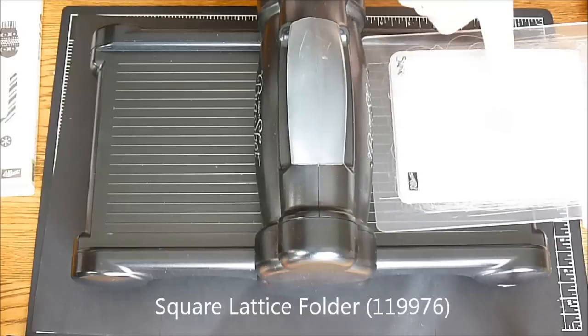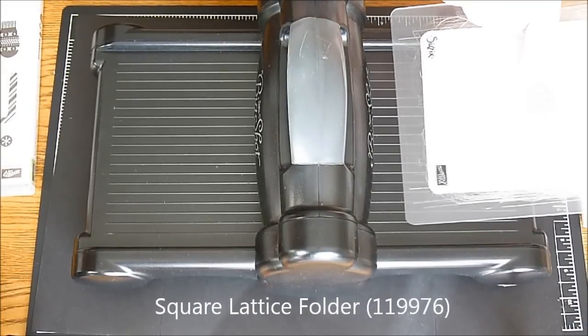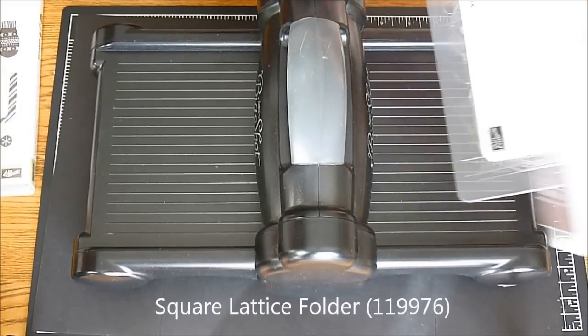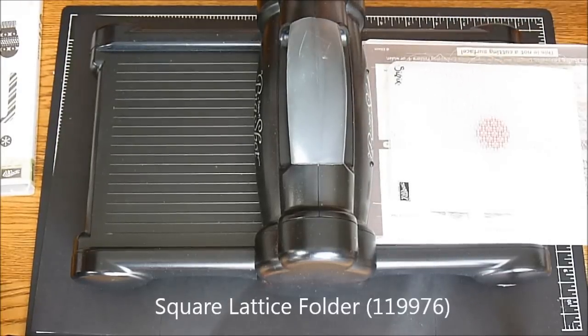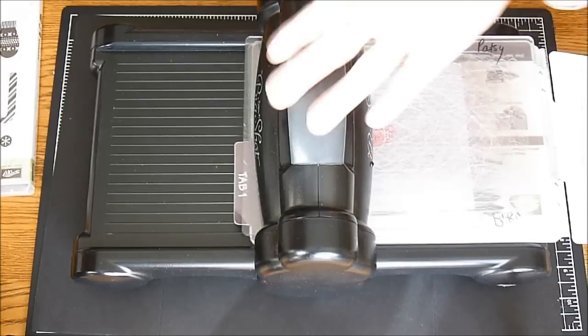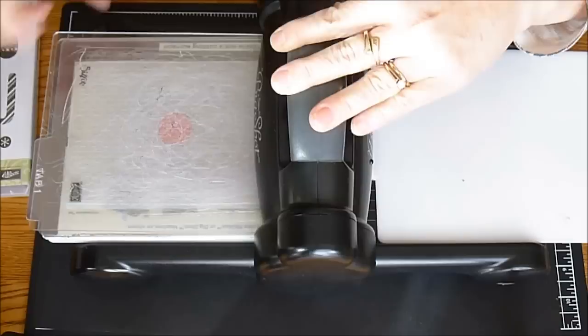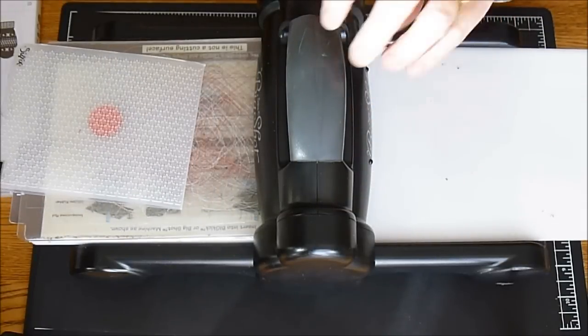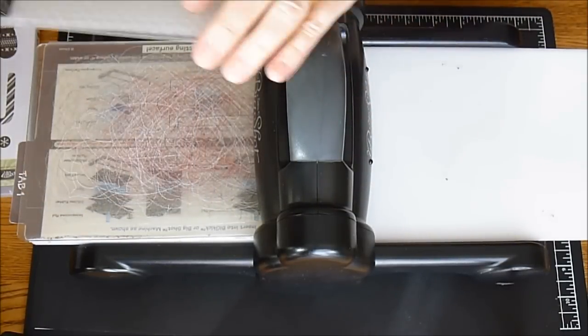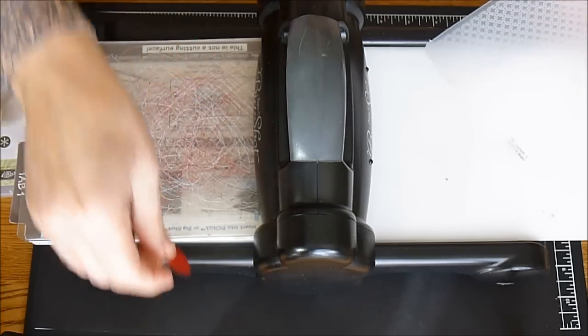We're taking our reindeer nose, putting it in between this folder which is the square lattice folder which is one I use quite frequently. We're going to sandwich it. I've got it on tab one. And we're cranking through. And there we have our little decorative nose.